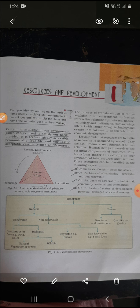Now technology is available to us, but to use that technology, what is needed? An institution is needed — a place where that technology is used. So physical environment and natural resources are dependent on technology, and technology is dependent on institution. It is an interdependent relationship between nature, technology, and institution. Without technology, natural resources have no use, and without institution, we cannot use technology in any way — until it comes to us systematically, we cannot use technology.